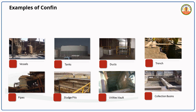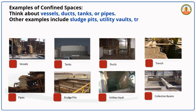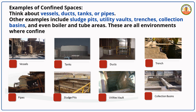Examples of confined spaces include vessels, ducts, tanks, and pipes. Other examples include sludge pits, utility vaults, trenches, collection basins, and even boiler and tube areas. These are all environments where confined space safety becomes crucial.